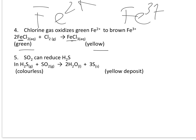Number 5: SO₂ can reduce hydrogen sulfide, H₂S. The equation is: H₂S + SO₂ → 2H₂O + 3S. SO₂ is the oxidizing agent that reduces H₂S to sulfur, while SO₂ itself is oxidized. You have a color change from colorless to a yellow deposit of sulfur — so the color changes from colorless to yellow.